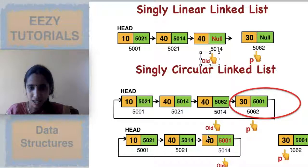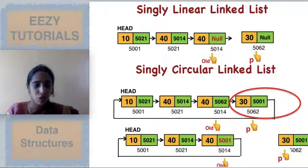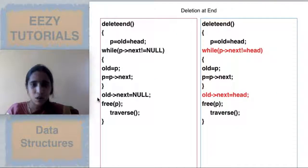For a circular list also same thing you have to do. You have to make old and p pointing to the last and last but one node like this. Then here instead of making old's next as null, you have to make old's next as head. That is the change you are going to do. So we will see the code.